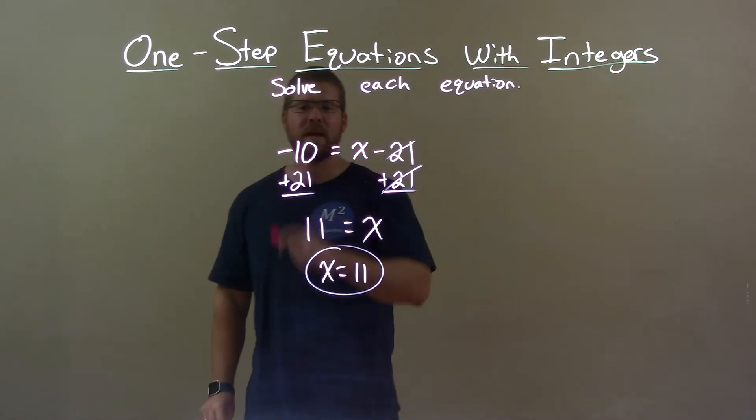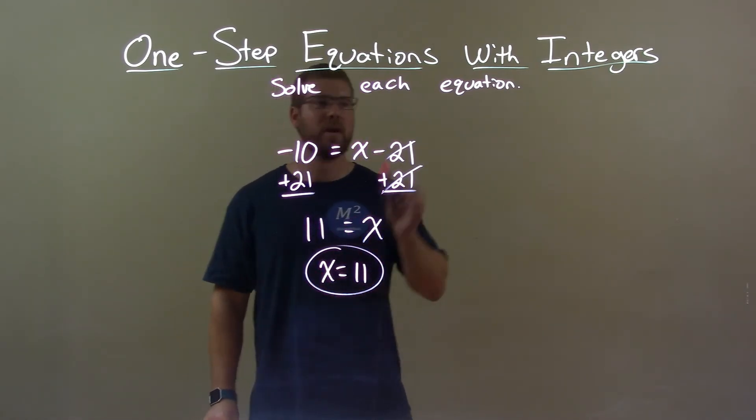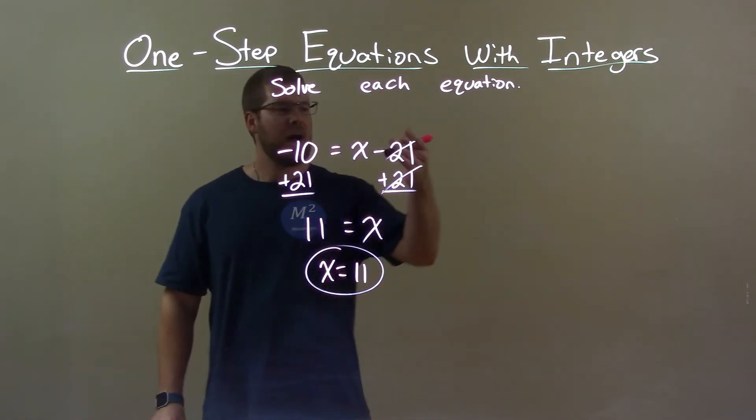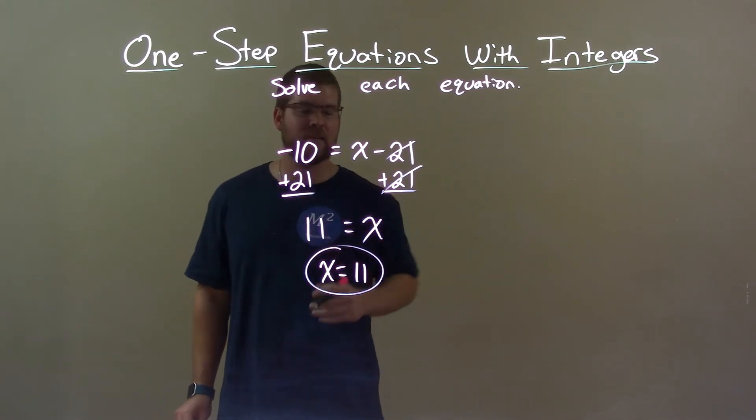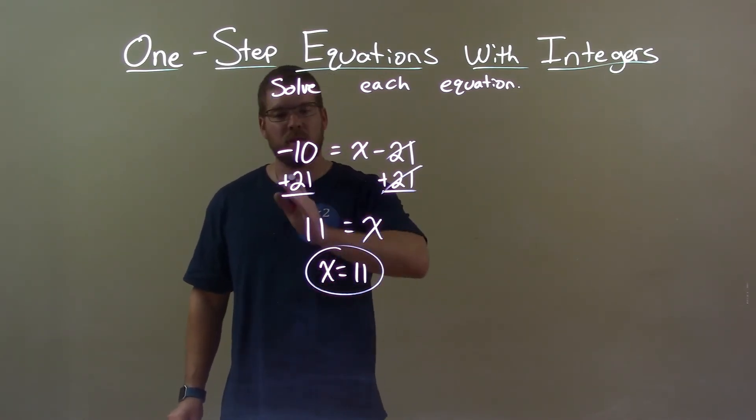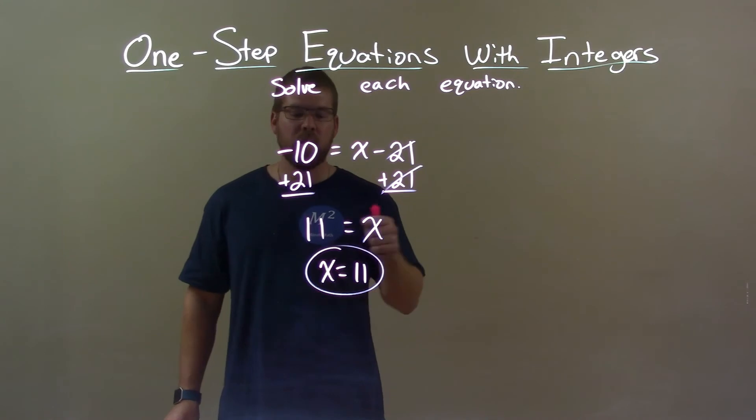Quick recap. We're given negative 10 equals x minus 21, and we have to solve for x. I added 21 to both sides. That got me x by itself. Negative 10 plus 21 is positive 11. So again, our final answer is x equals 11.